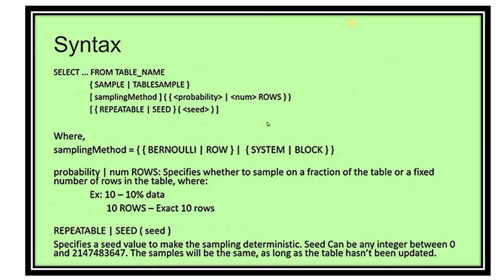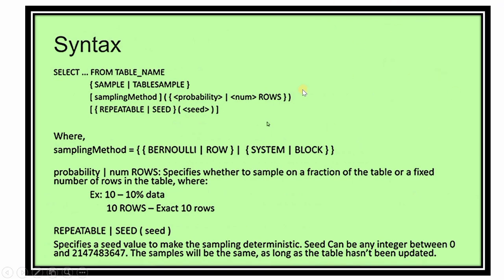Now let's see the syntax. To sample data: SELECT * FROM table_name SAMPLE (or TABLESAMPLE — both work). After that, specify the sampling method — Bernoulli or Row, System or Block — followed by the probability or number of rows. For example: SAMPLE ROW (10) for 10 percent, or SAMPLE (10 ROWS) for a fixed 10 rows. There is also the REPEATABLE or SEED keyword, which we will discuss next.